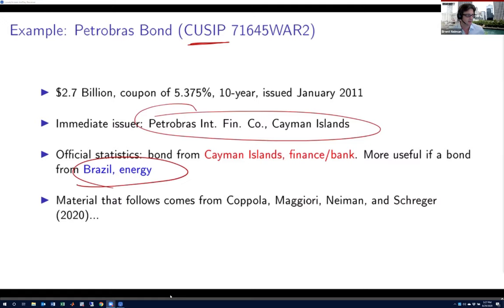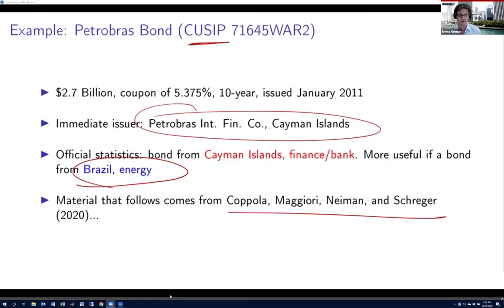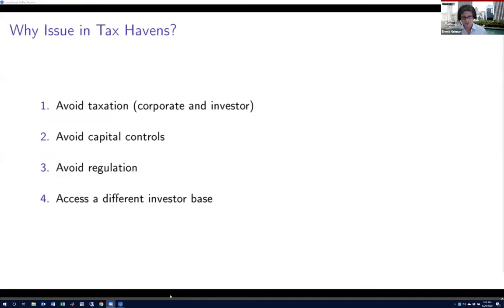The deeper material and most of the analysis underlying what I'm about to talk about comes from joint work with Antonio Coppola, Jesse Schrager, and Mateo Maggiori. The first question all this might raise is: why are these firms doing this? Why does Petrobras or other firms issue in tax havens?